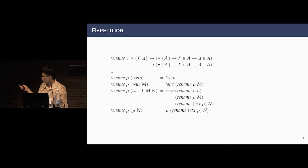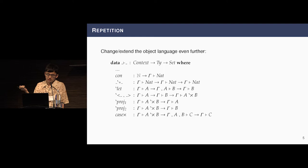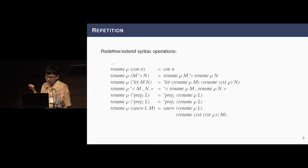Now, if we extend even further, you can see it becomes a very repeating work. We had so many rules here, and the rename function needs another bunch of definitions. So here's the repetition, right? We don't want to redefine the rename function every time we redefine or extend the object language we're working.